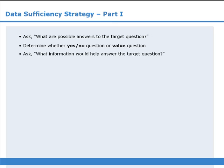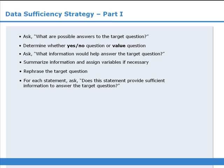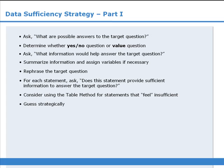There are several other strategies to consider when tackling data-sufficiency questions, and we will examine them in future lessons. These strategies include summarizing the information in the target question and assigning variables if necessary, rephrasing the target question to help identify whether or not the statements are sufficient, asking for each statement, does this statement provide sufficient information to answer the target question, using the table method for statements that feel insufficient, and guessing strategically.